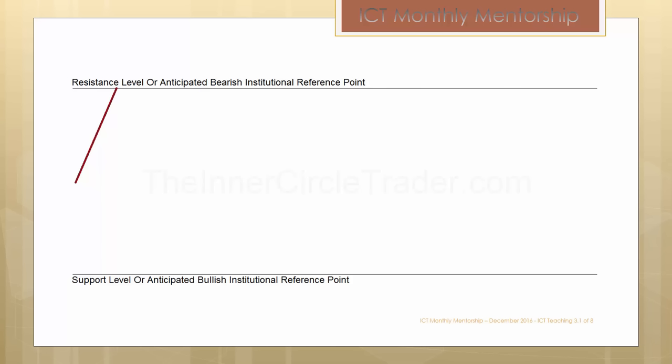If a resistance level is expected or you anticipate some selling pressure at a particular level, we wait for price to indicate a confirmation that there are willing sellers up there. If the market shows a repricing and rallies one more time up to it, we monitor whether the market has a willingness to break down. Eventually the market will show signs it wants to break lower. This specific pattern is referred to as an M pattern — because it looks like a giant M — and it's a failure swing with a confirmation break in market structure.